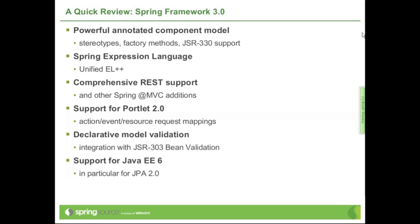Another important standardization effort is JSR 303, which is bean validation — essentially a set of standard constraint annotations and standard APIs for processing constraints and constraint violations.